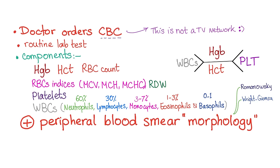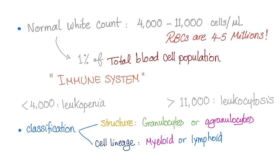The CBC was discussed in the previous video — it tells us white blood cells, platelets, and red blood cells. If you order a peripheral blood smear, you use a stain called Romanowski or Wright-Giemsa stain, though special stains may be needed for some things. White blood cells constitute less than 1% of the total blood cell population — but we care because they are part of your immune system.